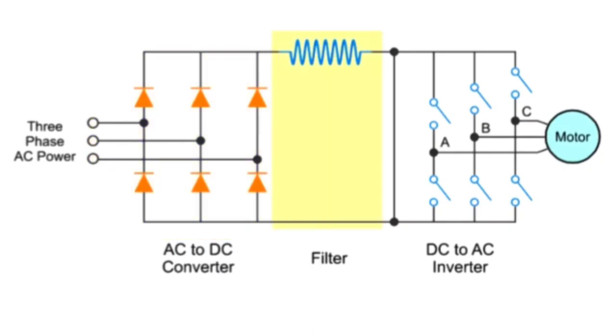The intermediate circuit acts as a filter and consists of a DC bus and associated circuitry. This stage of the wave conversion serves to stabilize and smooth the pulsating rectifier output to generate a constant DC voltage.